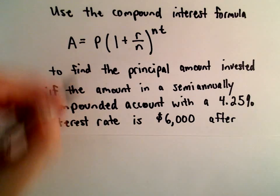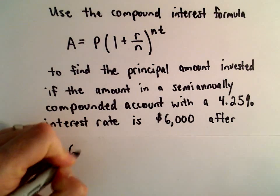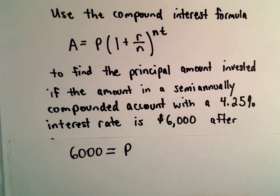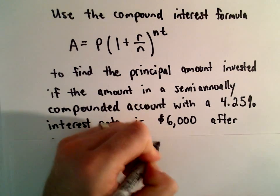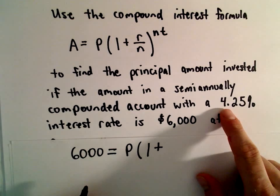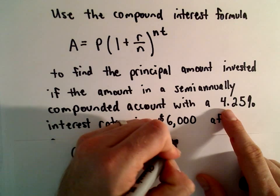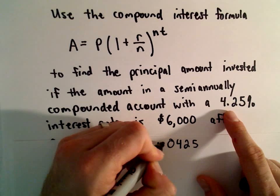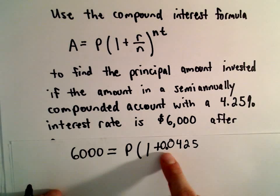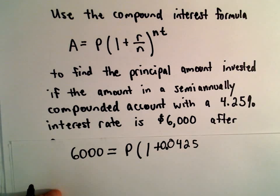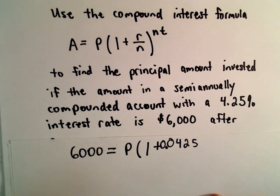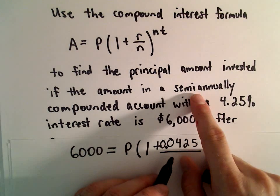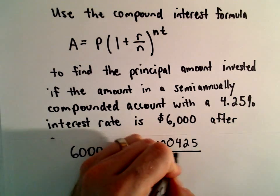We can just fill in our formula. The accumulated amount is going to be $6,000. The principal is what we don't know — that's what we're going to figure out. So 1 plus our rate: our rate is going to be 0.0425, and we're going to divide that by the number of compoundings per year, which is 2.